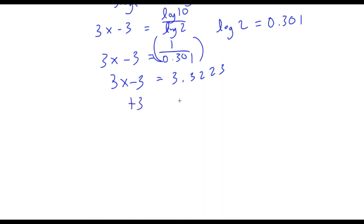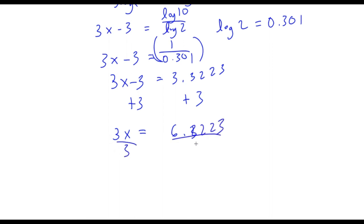I can add 3 on both sides, so 3x equals 3 plus 3.3223 equals 6.3223. Then dividing both sides by 3, x equals 6.3223 divided by 3, which is approximately 2.1074.